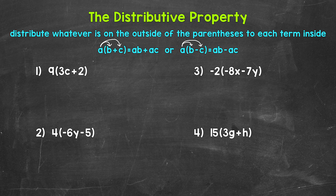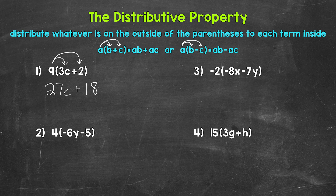Let's jump into number 1 where we have 9 and then 3c plus 2 in the parentheses. Let's distribute that 9 to the 3c and to the 2. So we have 9 times 3c, which is 27c, plus — so we bring that addition sign down — and then we have 9 times 2, which is 18. So we end up with 27c plus 18. We don't have any like terms that we can combine, so this has been simplified. So again, 27c plus 18.